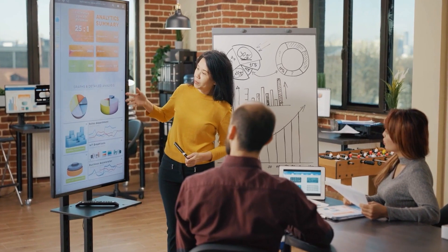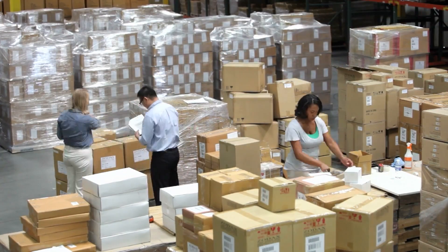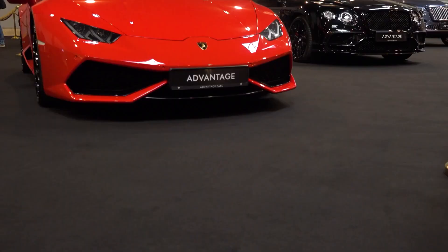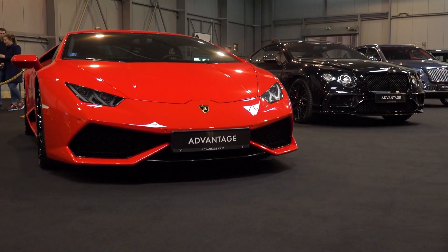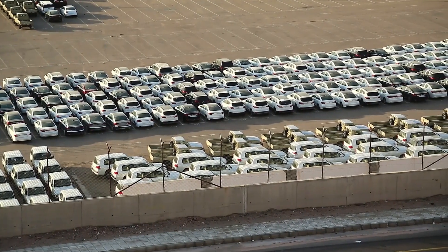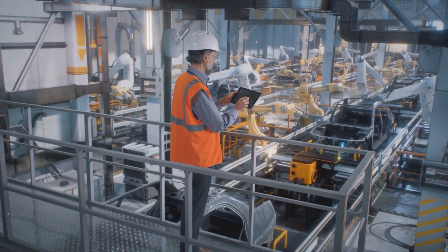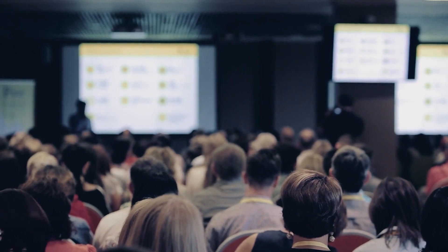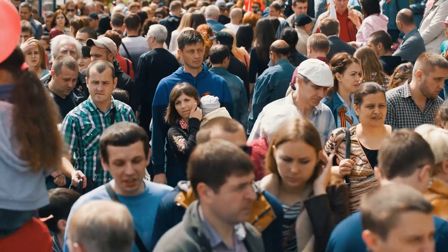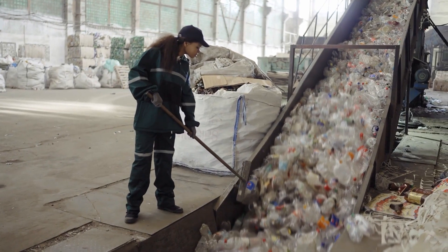Thirdly, specialization allows businesses to take advantage of economies of scale, which means that as the level of production increases, the average cost of producing each individual unit declines. For example, if a factory only produces 100 cars a year, each car will be quite expensive to make on average. However, if a factory produces 50,000 cars a year, it can set up an assembly line with huge machines and workers performing specialized tasks, and the average cost per car will be lower. The ultimate result is that society as a whole can produce and consume far more than each person could on their own. Essentially, the division and specialization of labor has been a force against the problem of scarcity.